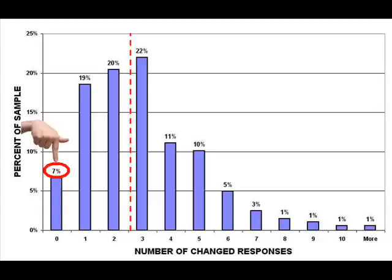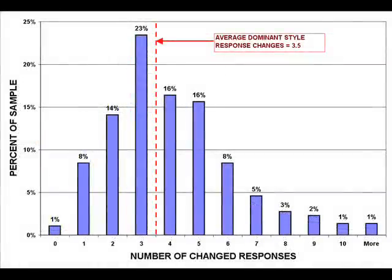But what about the changes that did shift dominant styles? Those are the ones that the practitioner is going to hear about in a debriefing. People who changed dominant styles changed an average of 3.5 IOPT responses, versus 2.5 for the whole retest population. That means a single response — the difference between 3.5 and 2.5 — determined if the average person was declared one thing or another. Applied to traditional tools, it would be like saying a person was judged to be dominant versus compliant on the basis of a single question. Kind of a thin reed on which to hang such an important judgment.